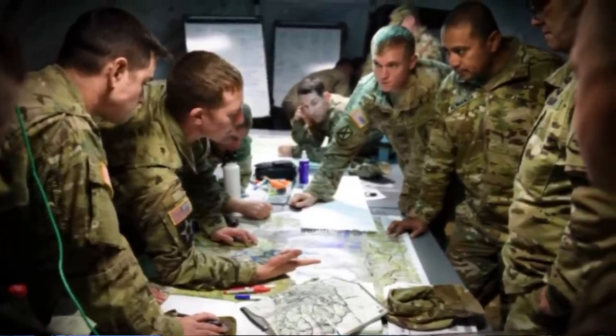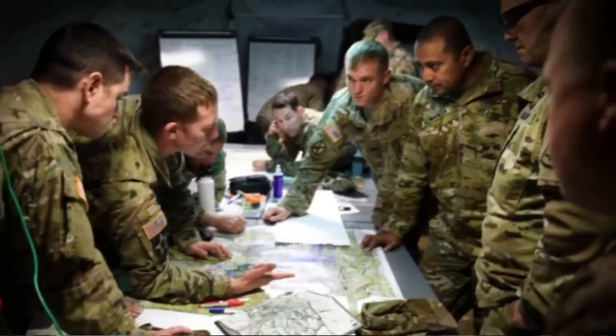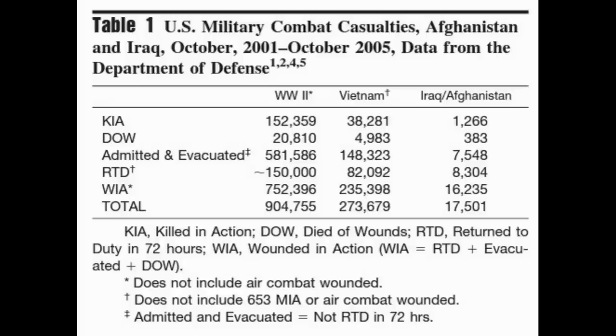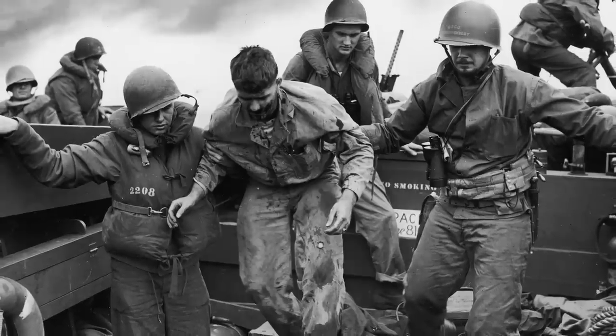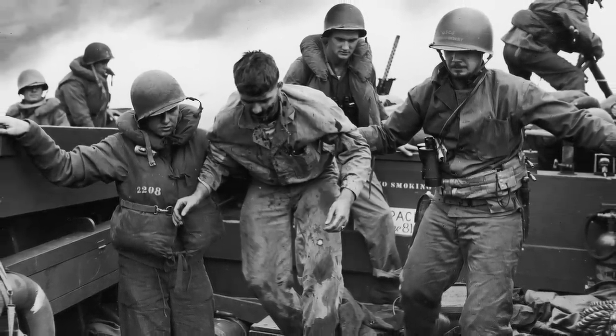I've seen some people incorrectly attribute it to casualty estimates in a few ways, so let's hit that first. There are ratios that can be used to estimate killed versus wounded for specific conflicts, but this isn't it. For example, the U.S. Department of Defense has a series of reports outlining American casualty data, and in that, it shows that in World War II, roughly five service members were wounded for every one killed.